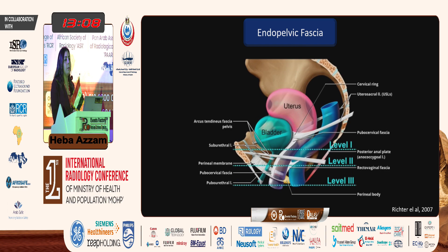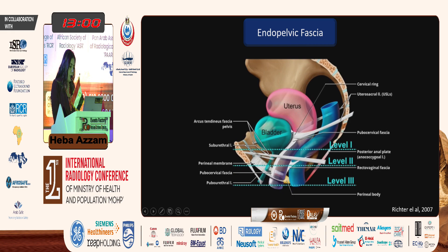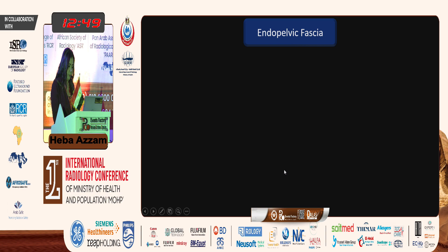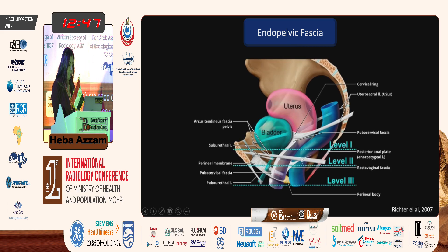Endopelvic fascia can be classified in many ways. Anatomically, the anterior support is the pubocervical fascia — the white sheet extending between the uterus and the pubic bone — and posteriorly, the rectovaginal fascia between the uterus and the rectum. The middle part is the parametrium and paracolpia, attaching the uterus and vagina to the side pelvic walls.